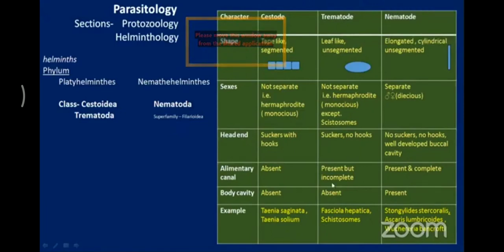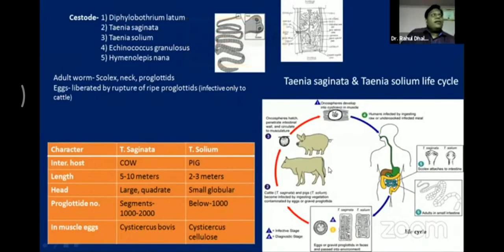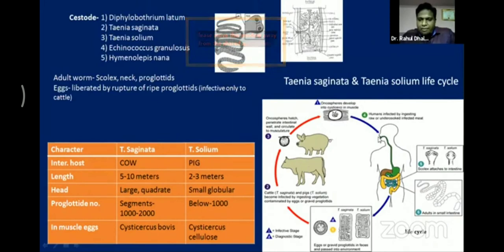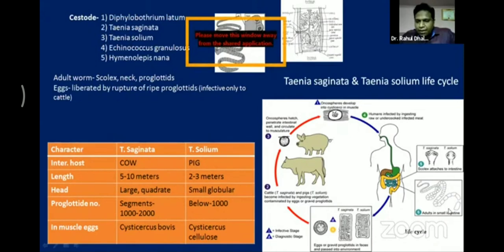For the life cycle of cestodes — example Taenia saginata and Taenia solium: when an infected person passes tapes and ova in feces, the eggs attach to grass. During grazing, pigs and cows ingest these eggs; the eggs develop into onchospheres and attach to the muscles of the animals. When a person consumes raw or undercooked flesh of this animal, the onchosphere's head attaches to the intestine and starts to form tapeworms, causing infection. Each tapeworm has both male and female organelles.